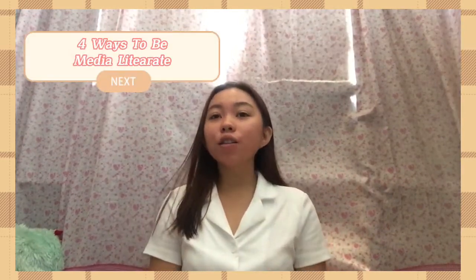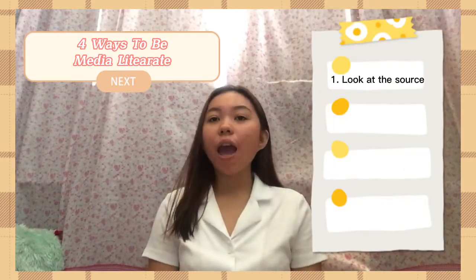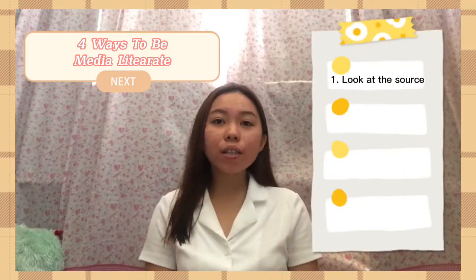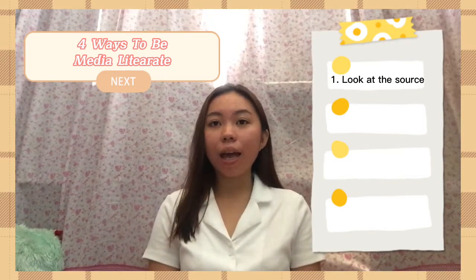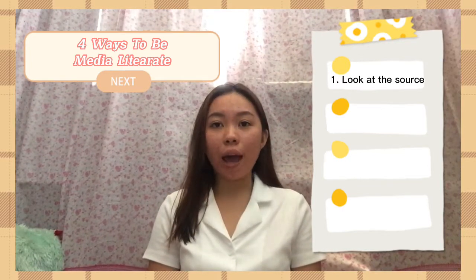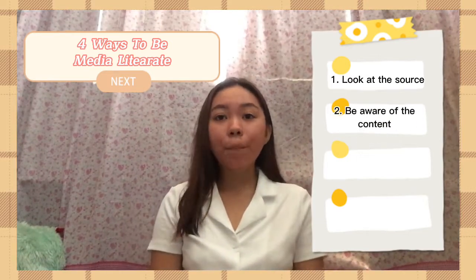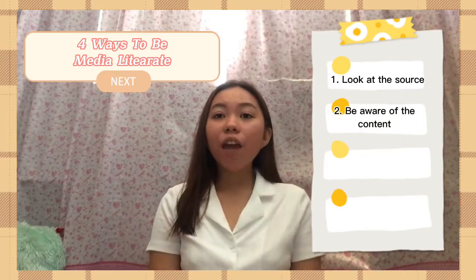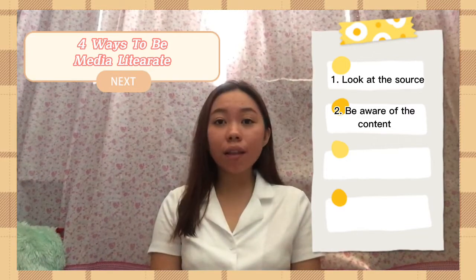Now I am going to elaborate four ways to be media literate. First, look at the source — if the source is a verified news organization, then it is a reliable source. Second, be aware of the content — if the source continuously publishes but does not cite any credible sources, it is safe to assume it is not credible until proven so.